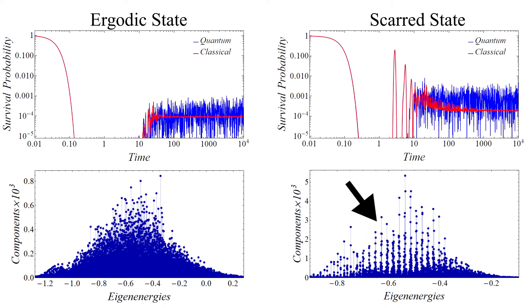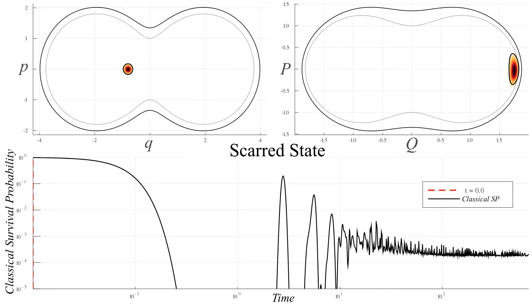On the one hand, the ergodic state shows a local density of states that looks randomly distributed inside a normal distribution. On the other hand, the scarred state shows a clear pattern in its components, resembling a cone.